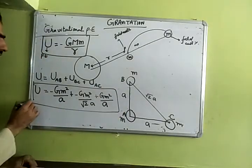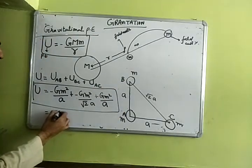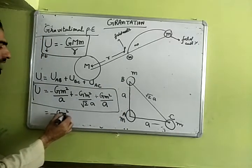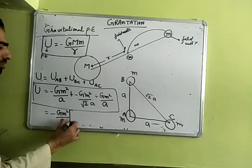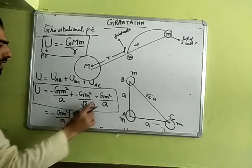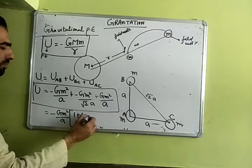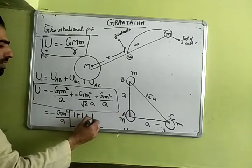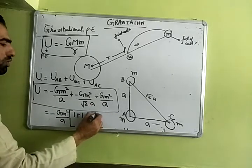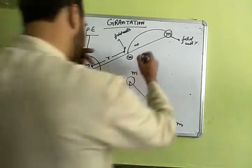Plus, what is the potential energy of AC? G M squared divided by a. So this is the total gravitational potential energy. You can take minus G M squared by a common, so what remains? 1 plus 1 plus 1 by root 2.